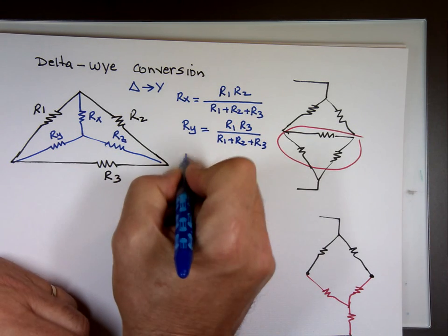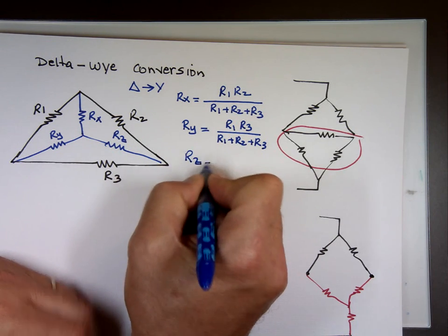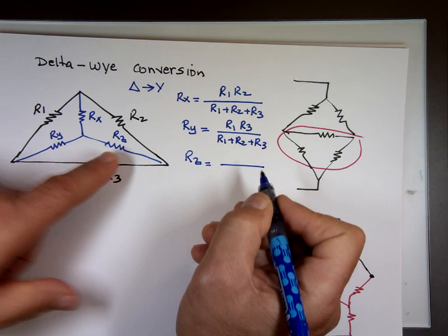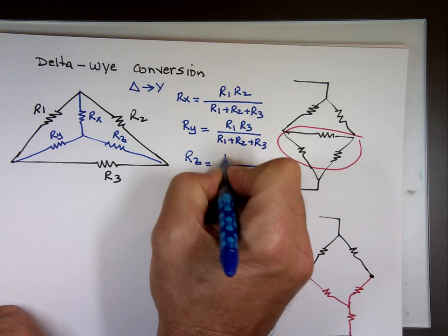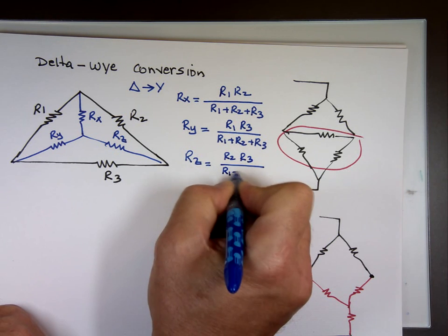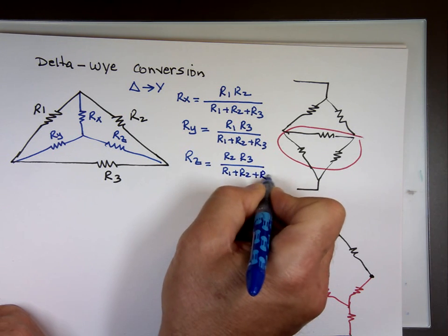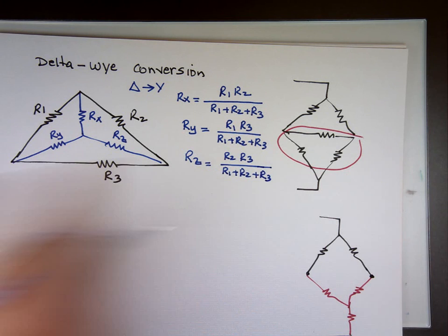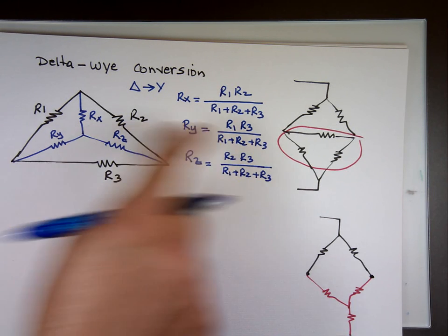And R sub Z will be, again, R sub Z between 2 and 3. On the top will be R2, R3. The bottom one, 1, 2, and 3. So that's how we change delta to Y.